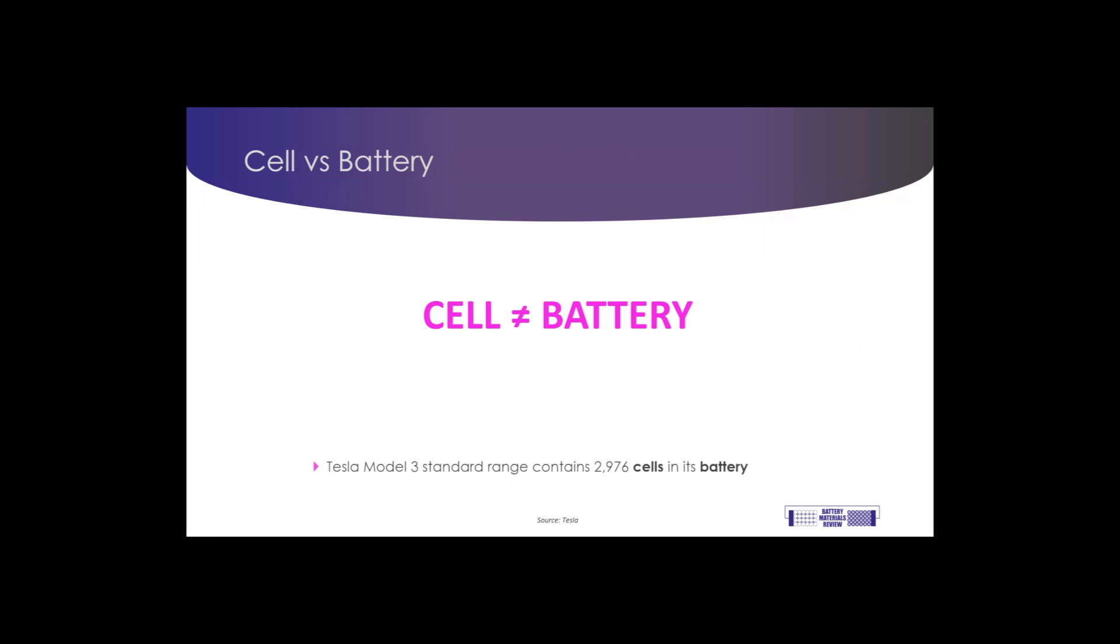So, for instance, the Tesla Model 3's battery actually contains nearly 3,000 individual cells within it. And this differentiation is really important when we talk about the materials used in the battery rather than the materials used in the cell.